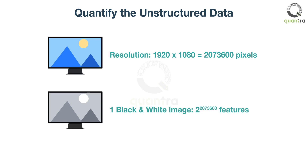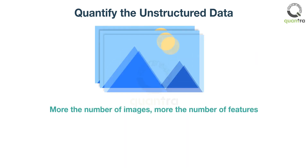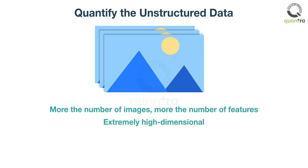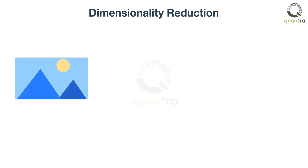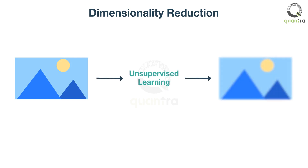This number becomes even larger when other colors are considered. Needless to say, the more the number of images, the more the number of features. The resulting data thus obtained is extremely high-dimensional. The process of extracting any insight from such data can be extremely challenging. It can however be managed by reducing the dimension. The unsupervised learning technique enables you to reduce the dimension of the dataset to a manageable number, while also retaining most of the information contained within the data.